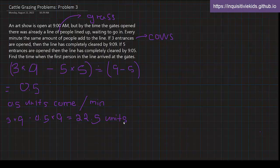Now, since 0.5 units come every minute but there was a total of 22.5 units, how many minutes did the first person wait until 9 AM opened? We can divide the total number, 22.5, by the amount of units that come per minute, 0.5. And we have 45.